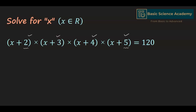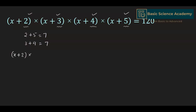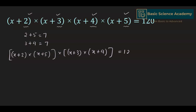In the first and fourth factors, the sum of the two numbers is 2 plus 5, which equals 7. In the second and third factors, the sum is 3 plus 4, which also equals 7. Hence we will multiply the first and fourth factors together, and the second and third factors together, to give 120. This helps us get similar values after multiplication and allows us to refactorize.